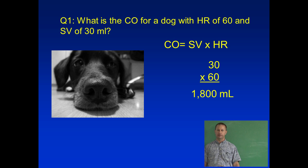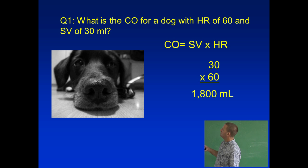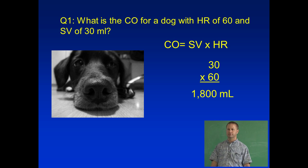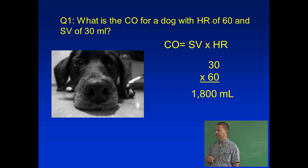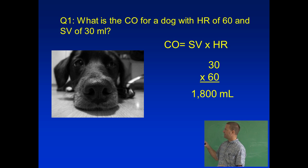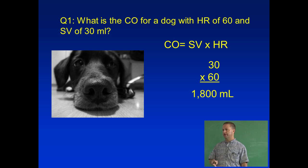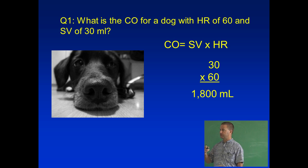Cardiac output: 30 times 60 is 1,800 milliliters per minute. This dog has 1.5 liters of blood, so in less than a minute he can circulate his entire blood volume — assuming that stroke volume and weight. A nice athletic dog lying there circulates its whole blood volume in a minute or less, and that's what people do as well.